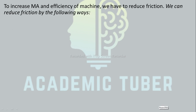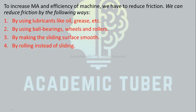To increase the efficiency of a machine, we have to reduce friction. We can reduce friction by using lubricants like oil and grease, by using ball bearings, wheels and rollers, by making the sliding surfaces smooth, and by rolling instead of sliding.